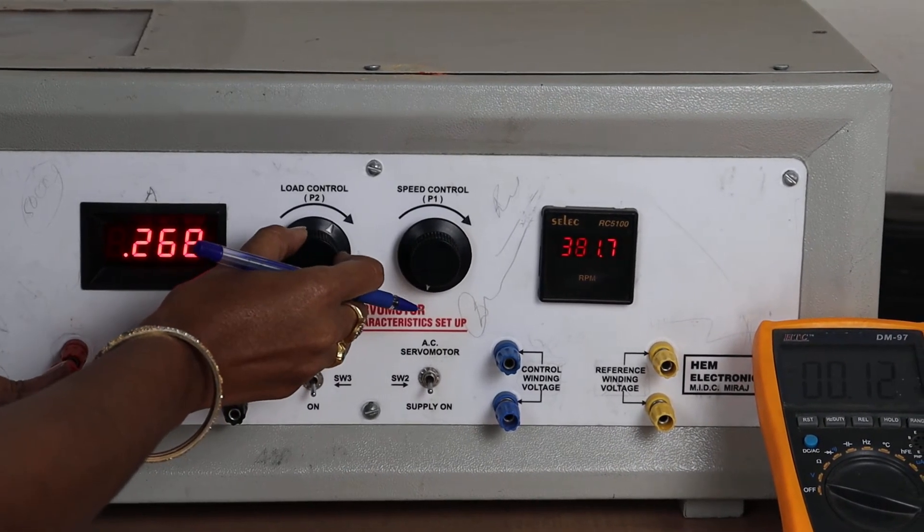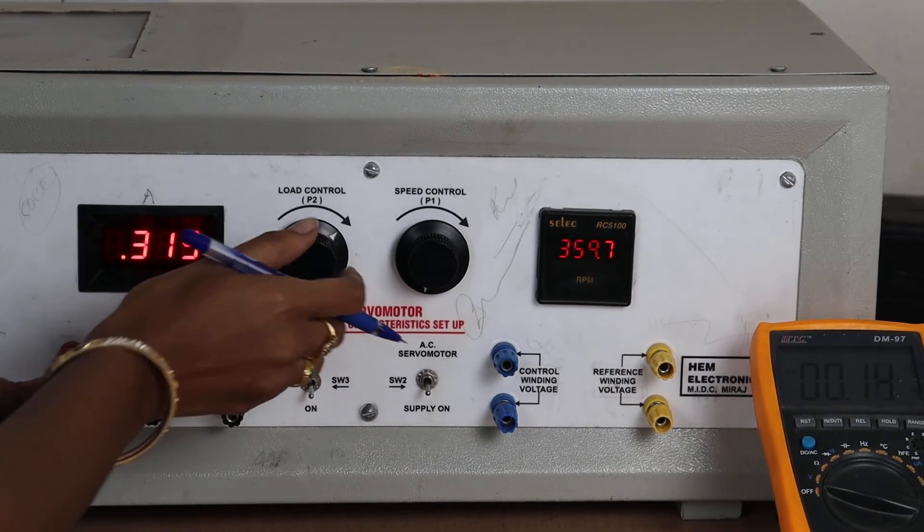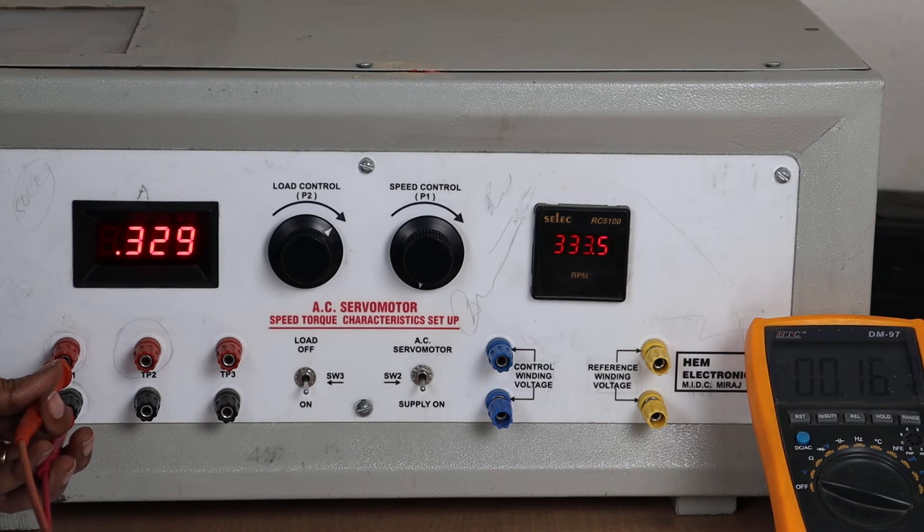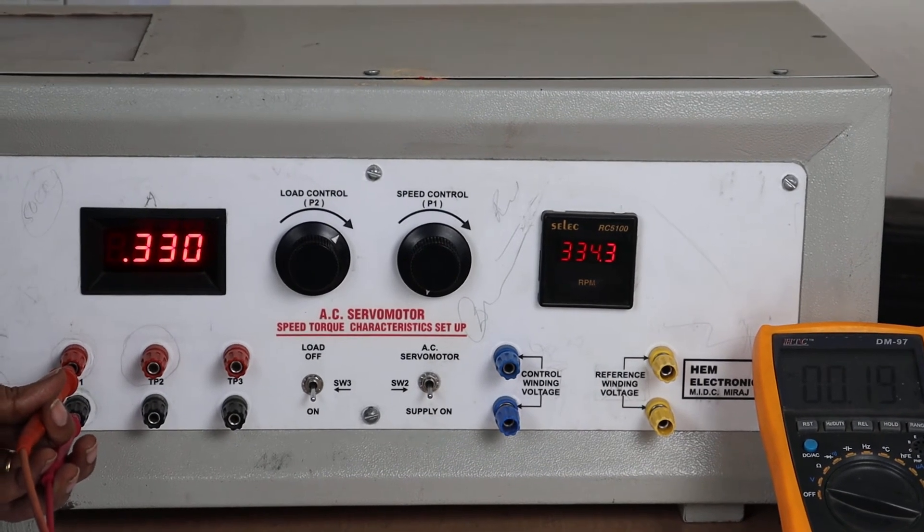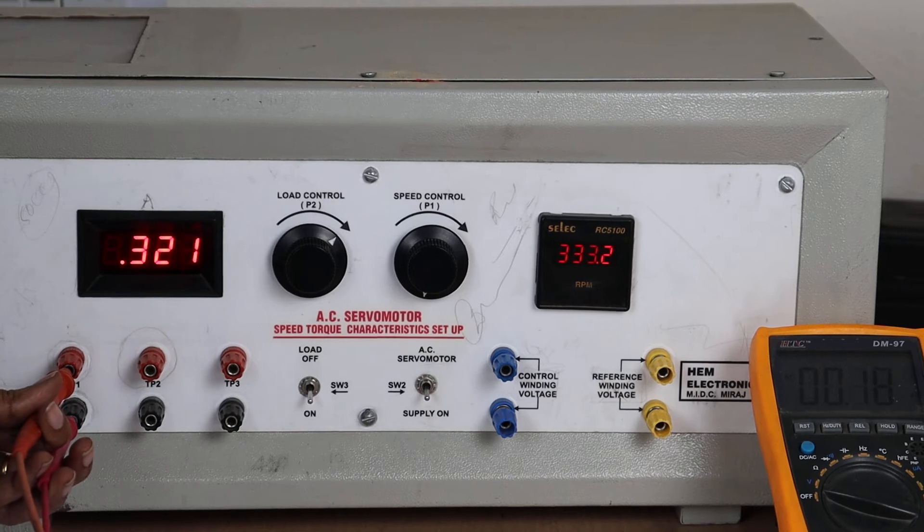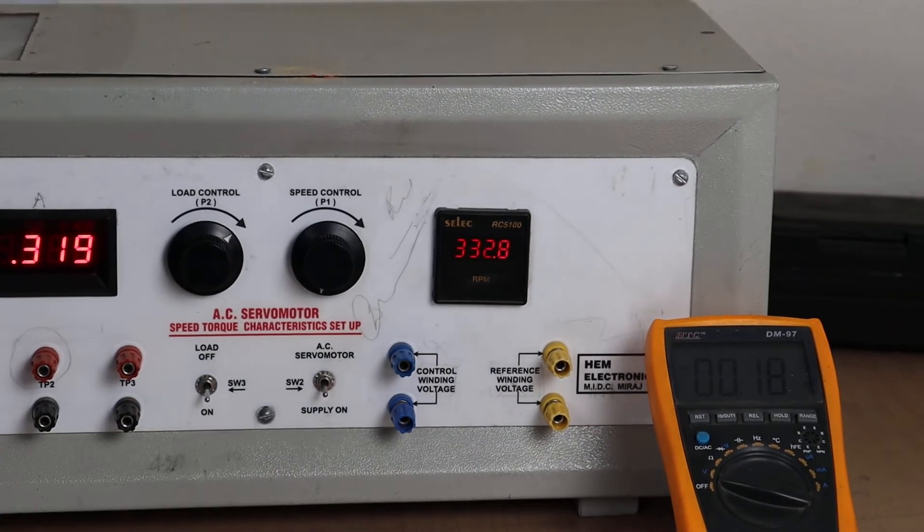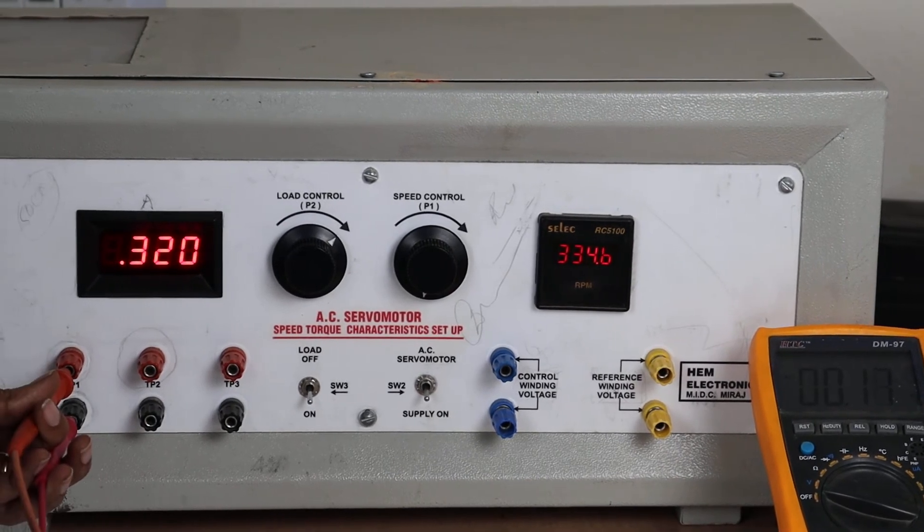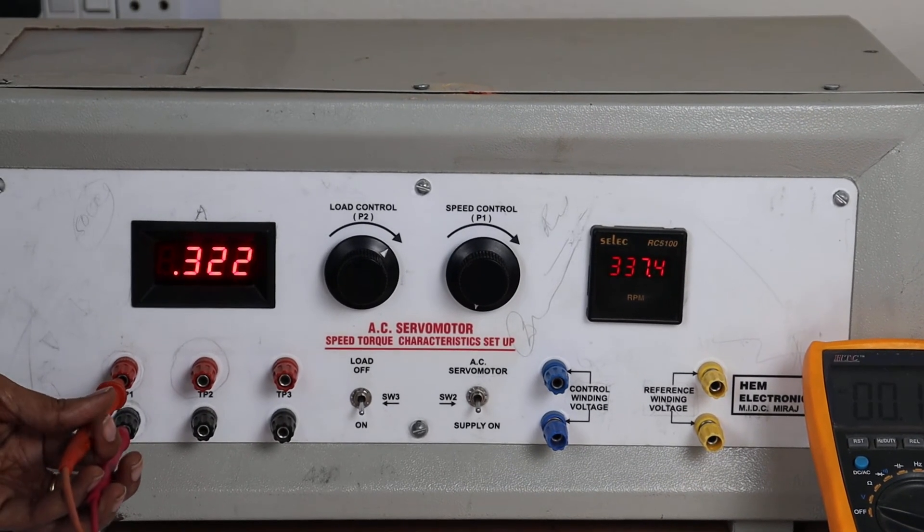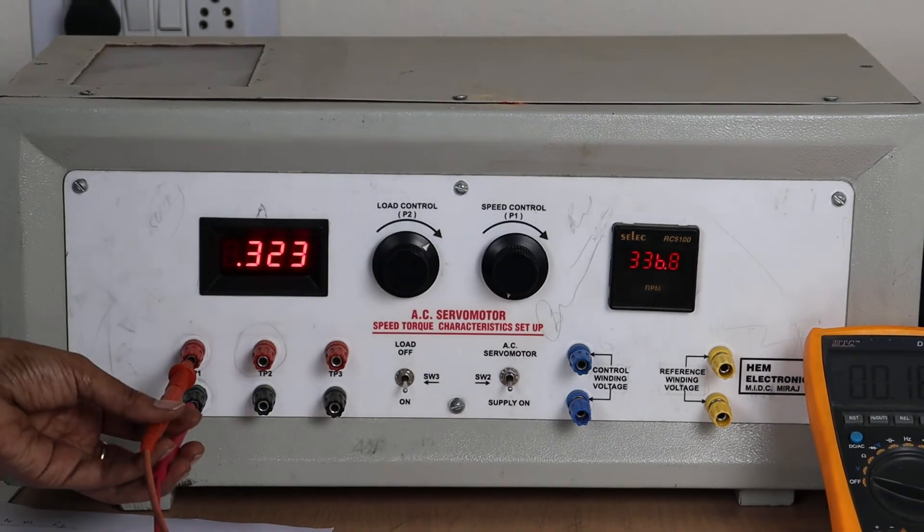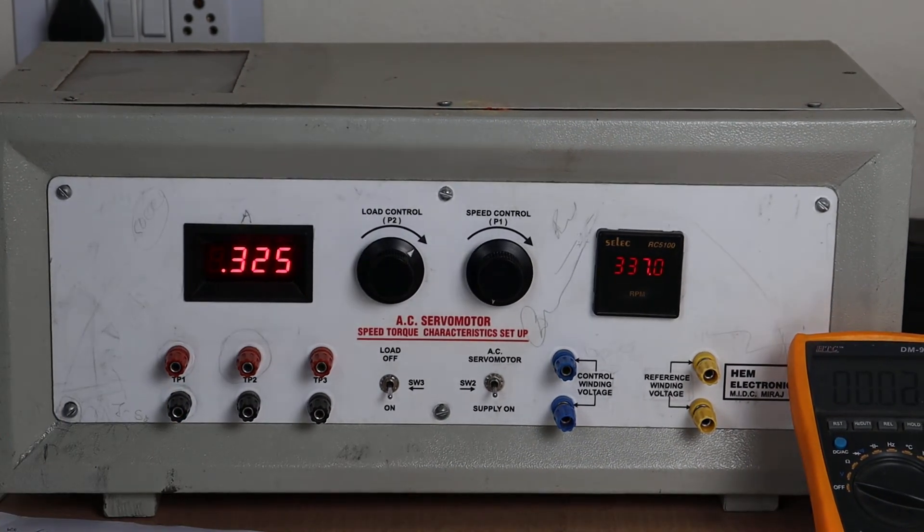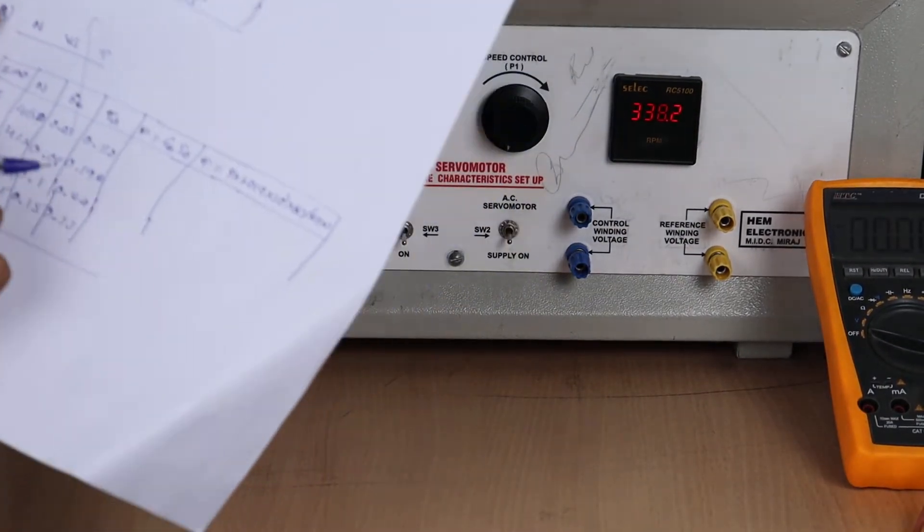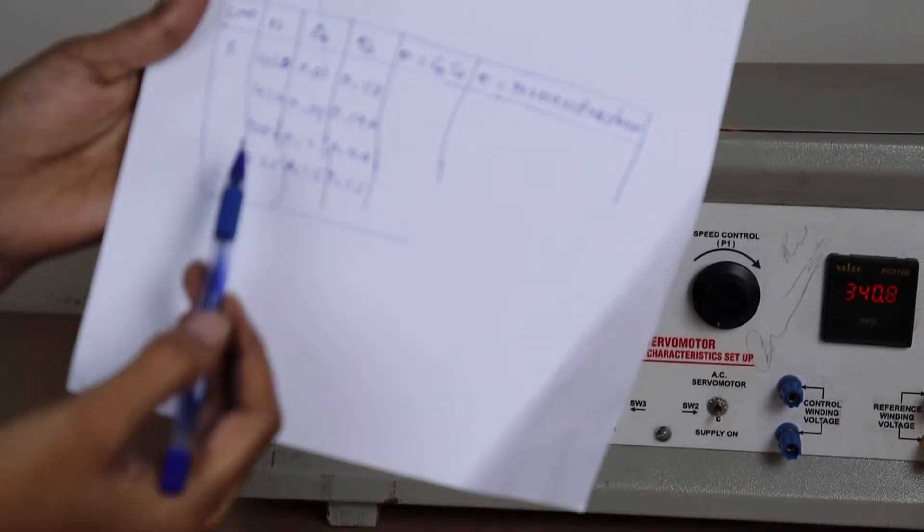I am taking one more value. 335. Current is 0.33. Back EMF value is 0.15. So like this by varying the load pointer or load control pointer, we have to note down the values of armature current, speed and back EMF. So you can see four readings we have taken.